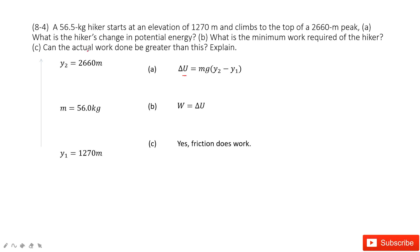The third part asks: can the actual work done be greater than this? Yes. Because in this process, we consider the change in potential from y1 to y2, we only considered the gravitational potential energy. But we can also consider friction — there must be friction between the hiker's shoes and the road, so friction also does work, and we didn't consider that. Also, when the hiker reaches y2, they may have a velocity, which is kinetic energy — we didn't consider that either. So the actual work done may be greater than this.